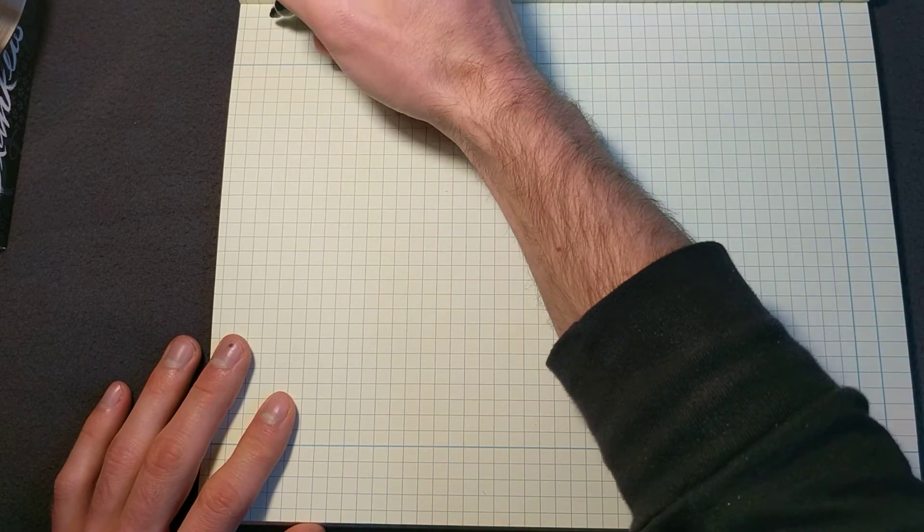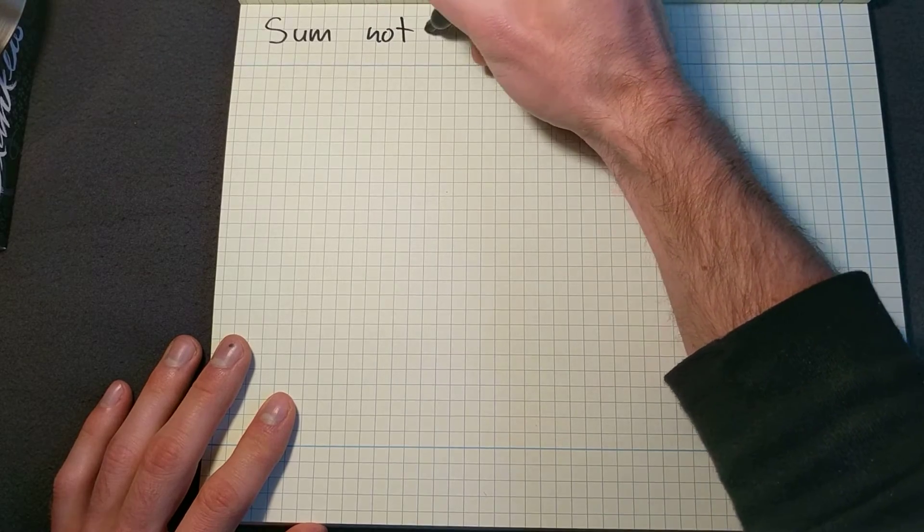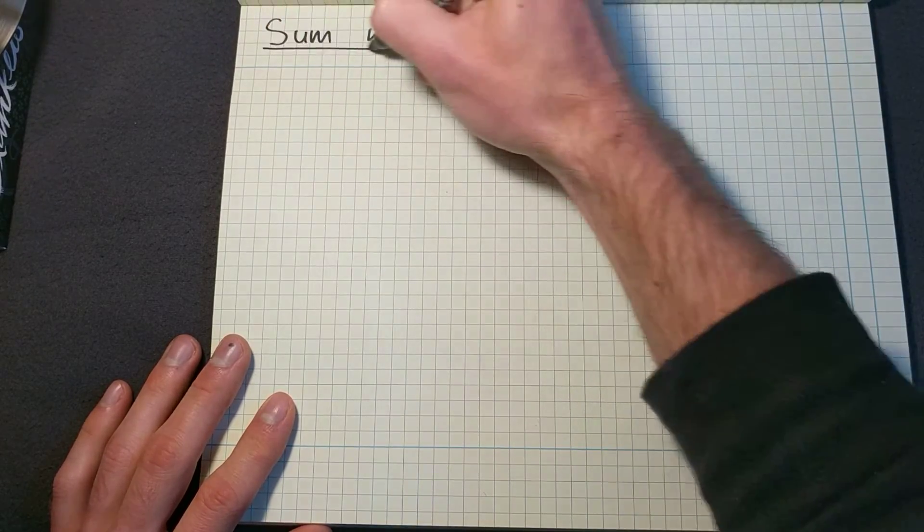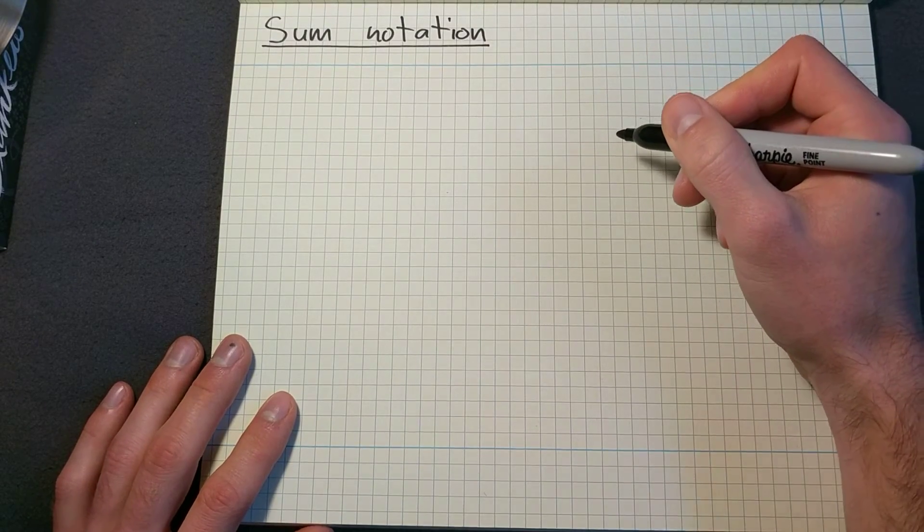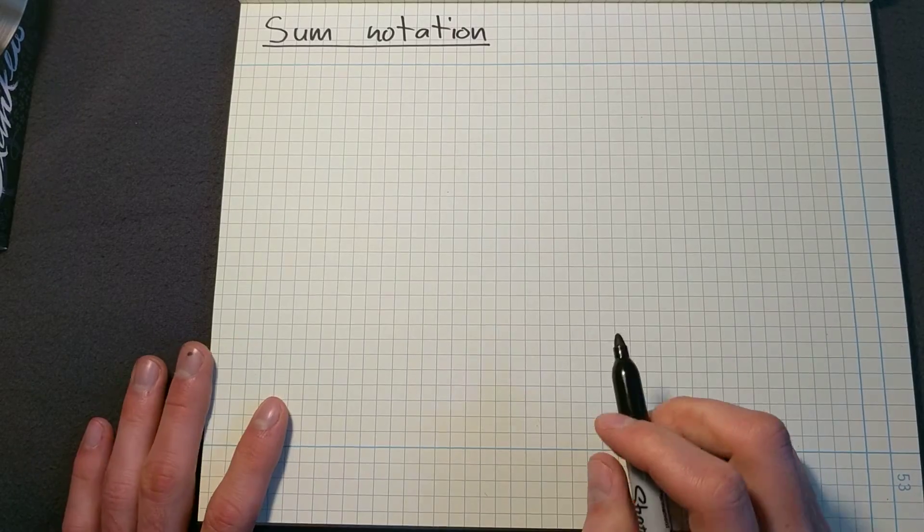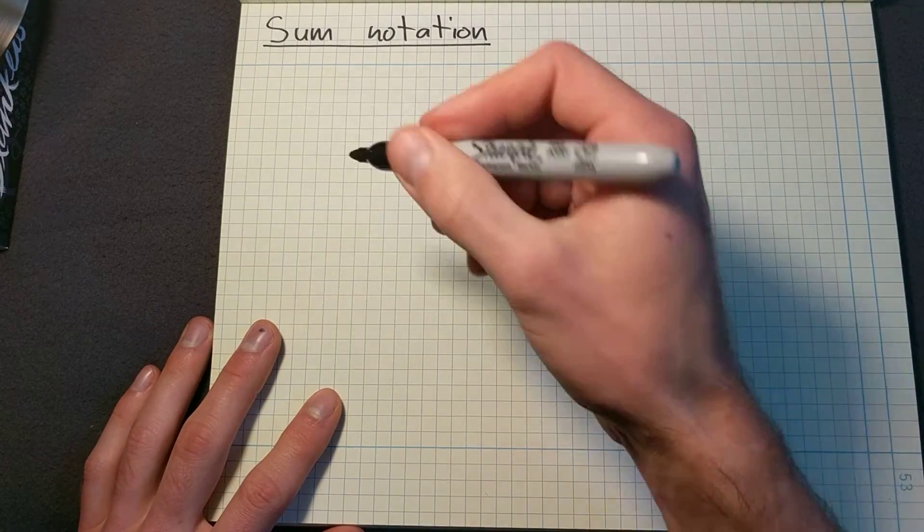In this video, we're going to go over sum notation in mathematics. We've learned what subscripts are, and let's use them to our advantage. Let's say that we have five puppies.